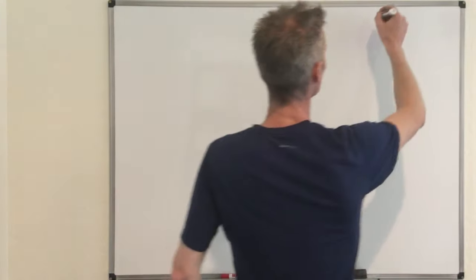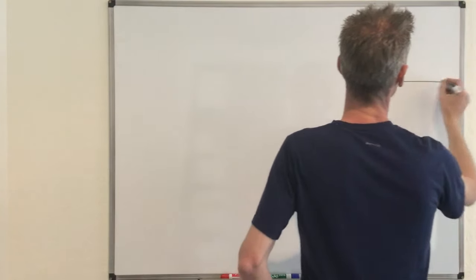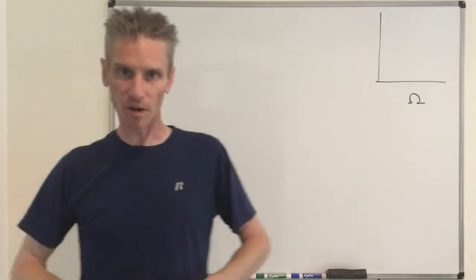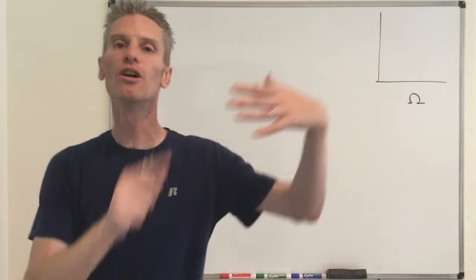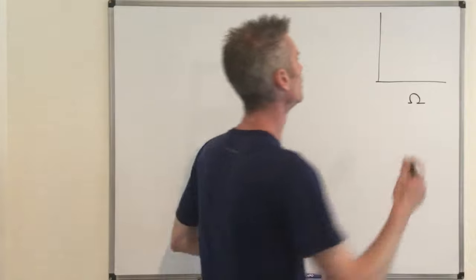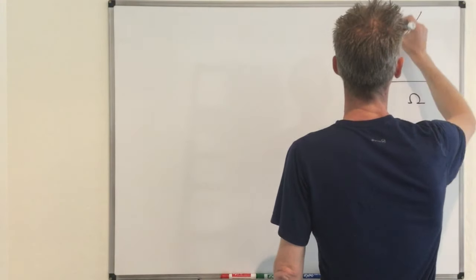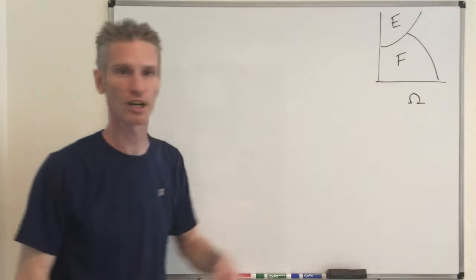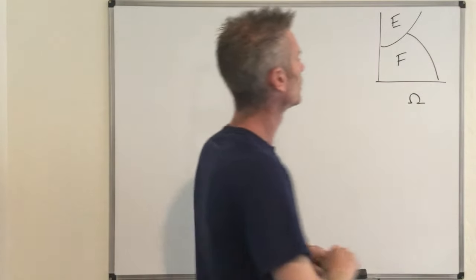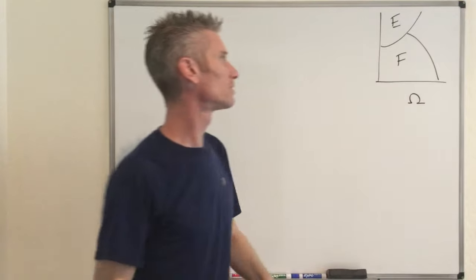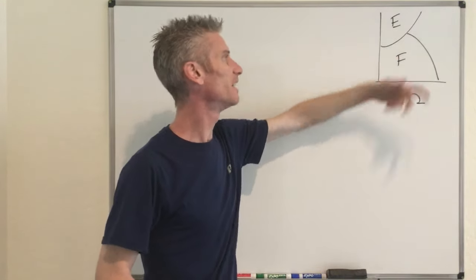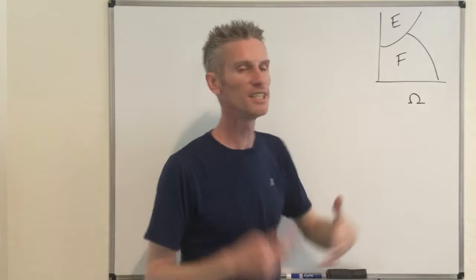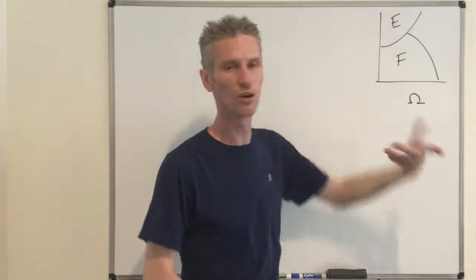So just a picture to explain what's going on. We have, let's say, Omega here. Omega is, in my picture, the sample space that corresponds to the original experiment. Then you have two events that we call E and F that are mutually exclusive. So they do not overlap. And clearly, if you do this experiment, it's possible that E and F do not occur.